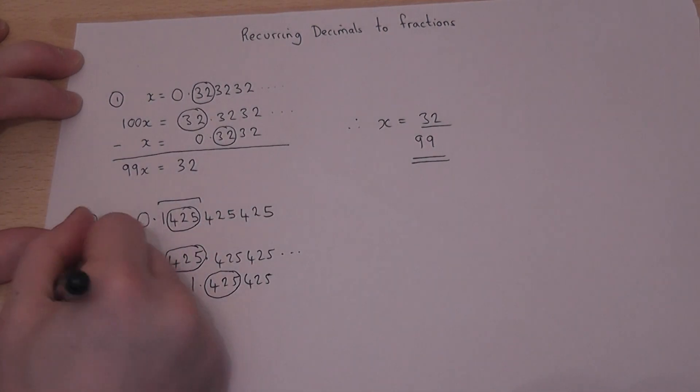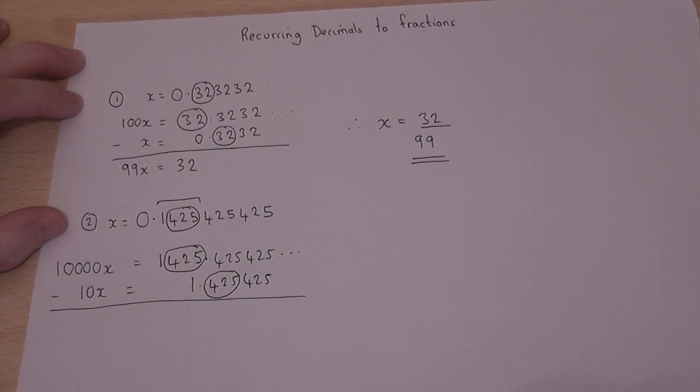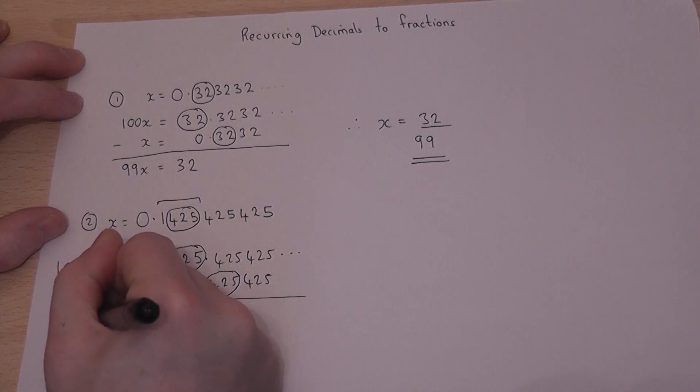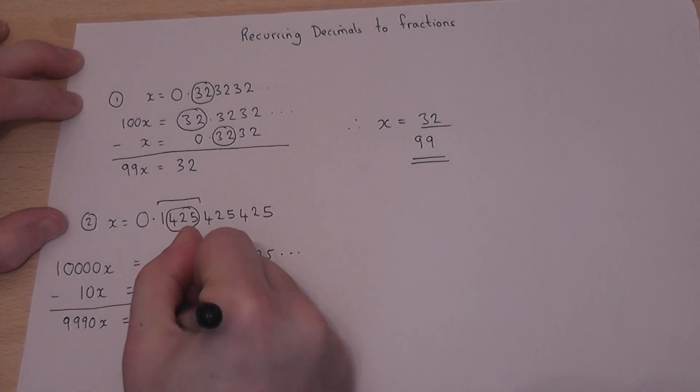So if I now subtract, then 10,000 take away 10 is 9990x. And if I now subtract away, all the numbers after the point cancel off, but 1425 take away 1 is 1424.